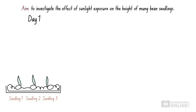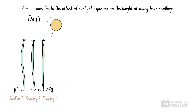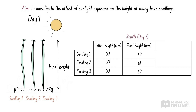Now imagine you are performing an experiment on mung bean seedlings. You want to investigate how the height of mung bean seedlings changes when exposed to sunlight over seven days. Three seedlings, all with initial heights of 10mm, are placed on a thick bed of wet cotton wool in a petri dish, then left in an open outdoor area not covered by shadows. After seven days, we measure the final height of each seedling and find the change in height by subtracting the initial height from the final height. The heights of the first, second, and third seedlings are found to have increased by 52mm, 51mm, and 52mm respectively. This experiment has a high degree of repeatability because the results are consistent between all three repetitions. Therefore, the results of this experiment are reliable.